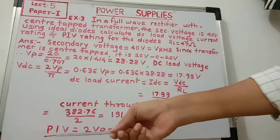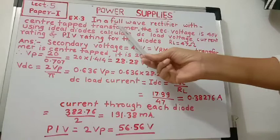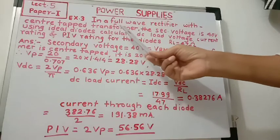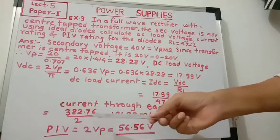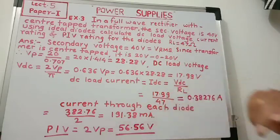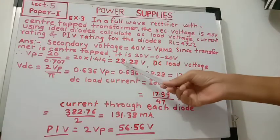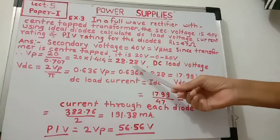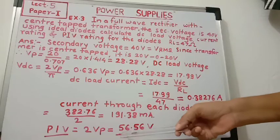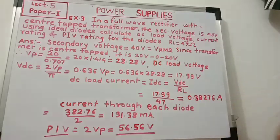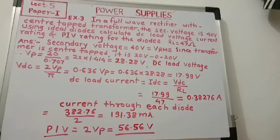Now, peak inverse voltage (PIV). In a center tap full wave rectifier circuit, PIV is equal to twice Vp — that is 2Vp. Here Vp is 28.28 multiplied by 2, which comes to 56.56 volts. So we will stop here.